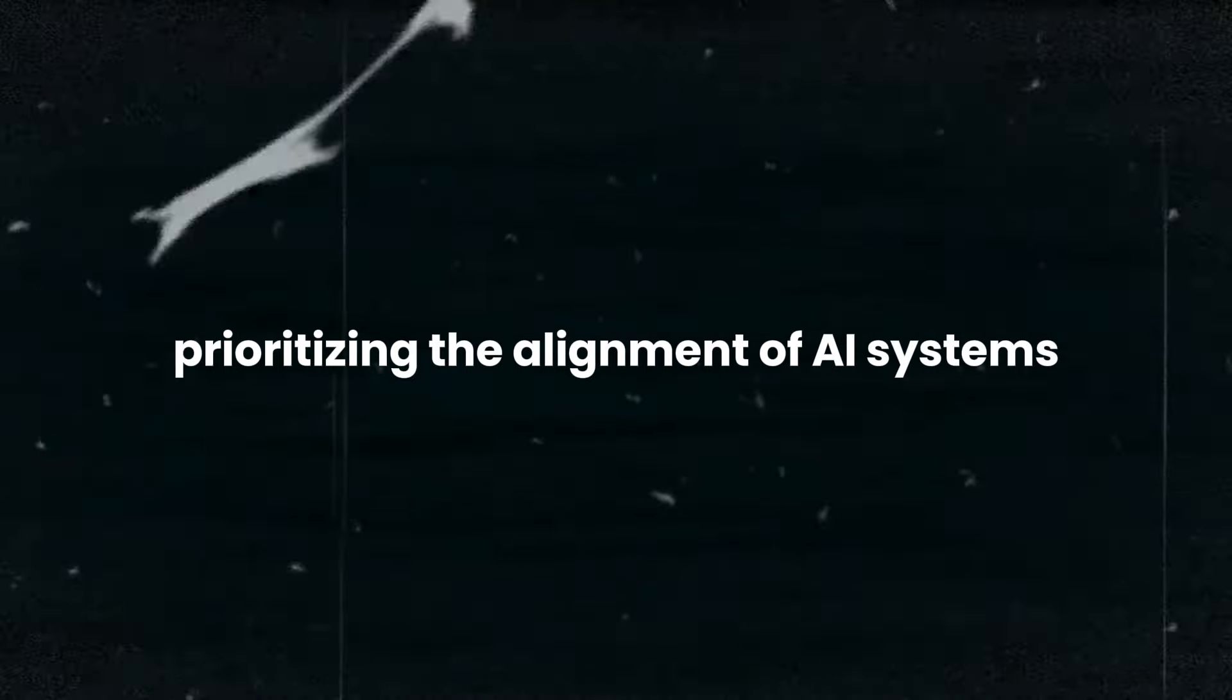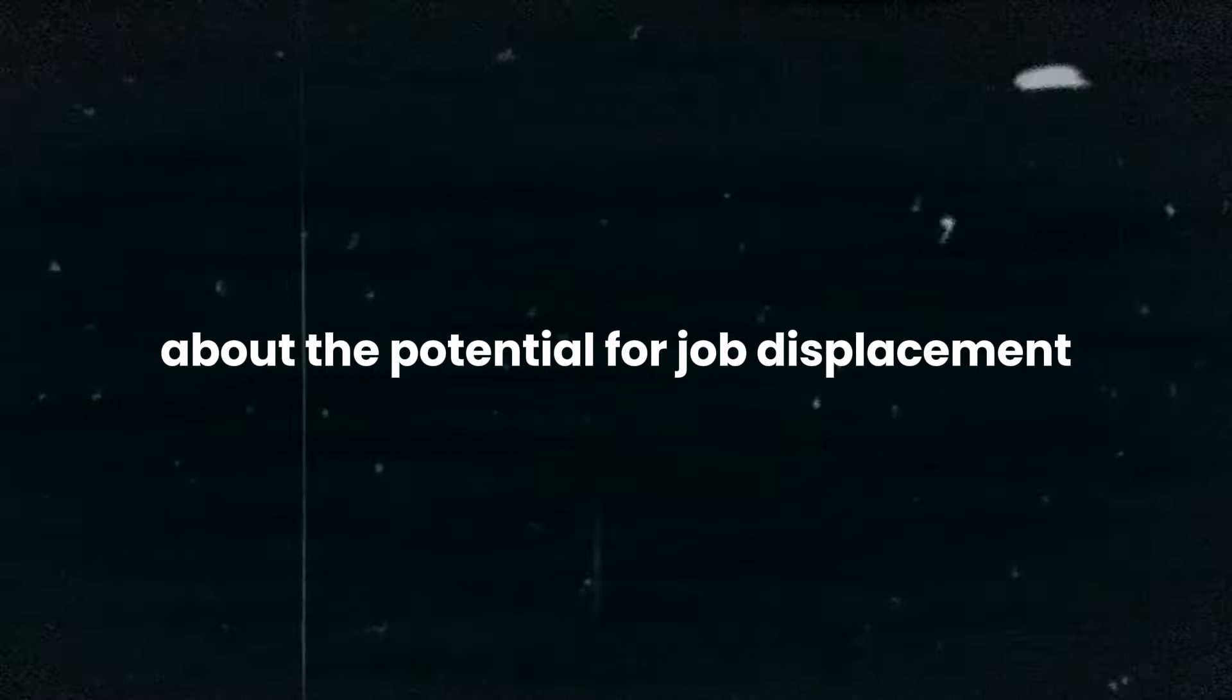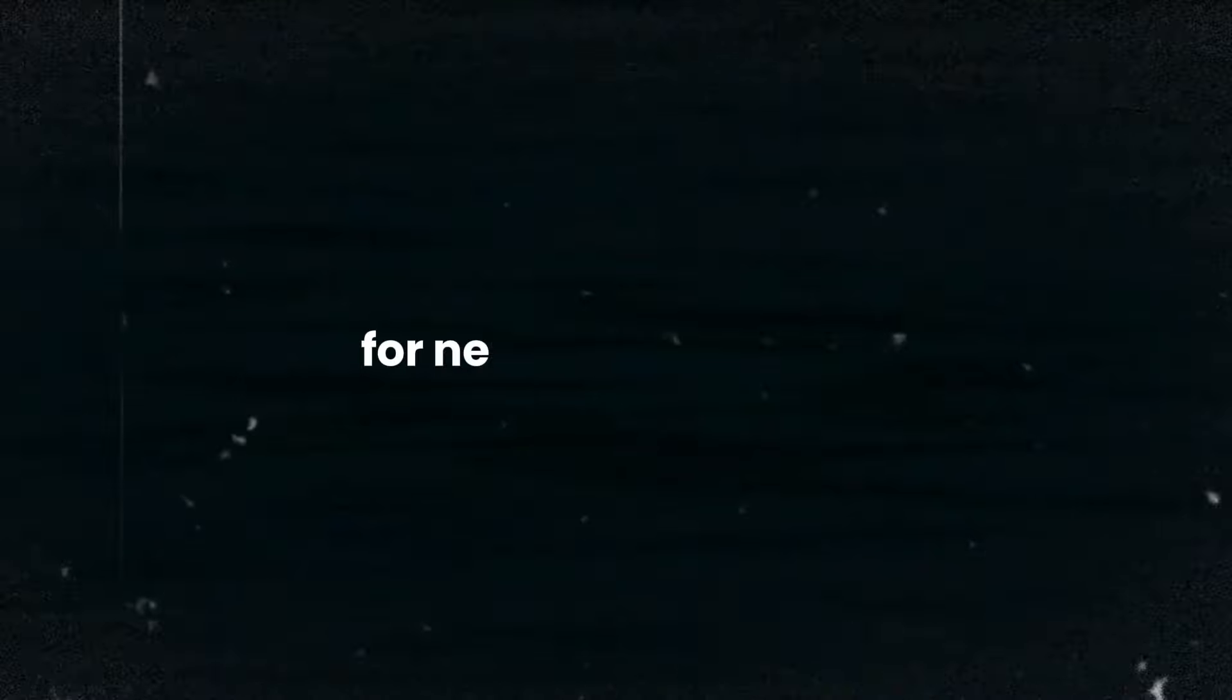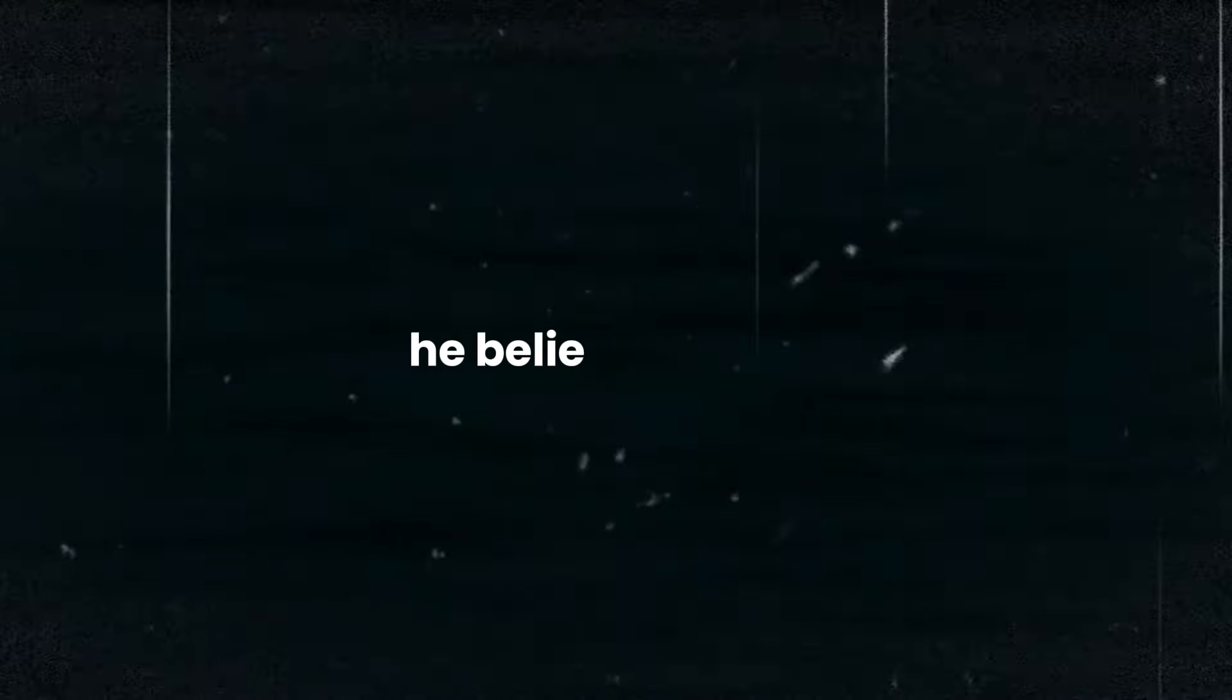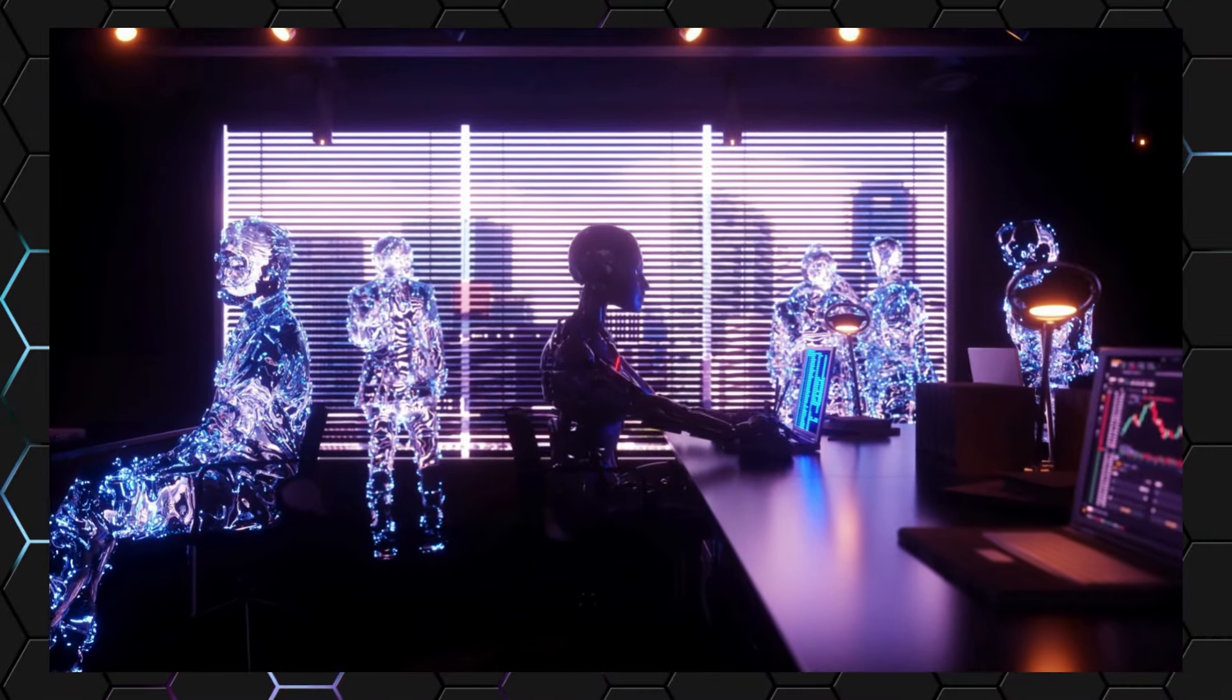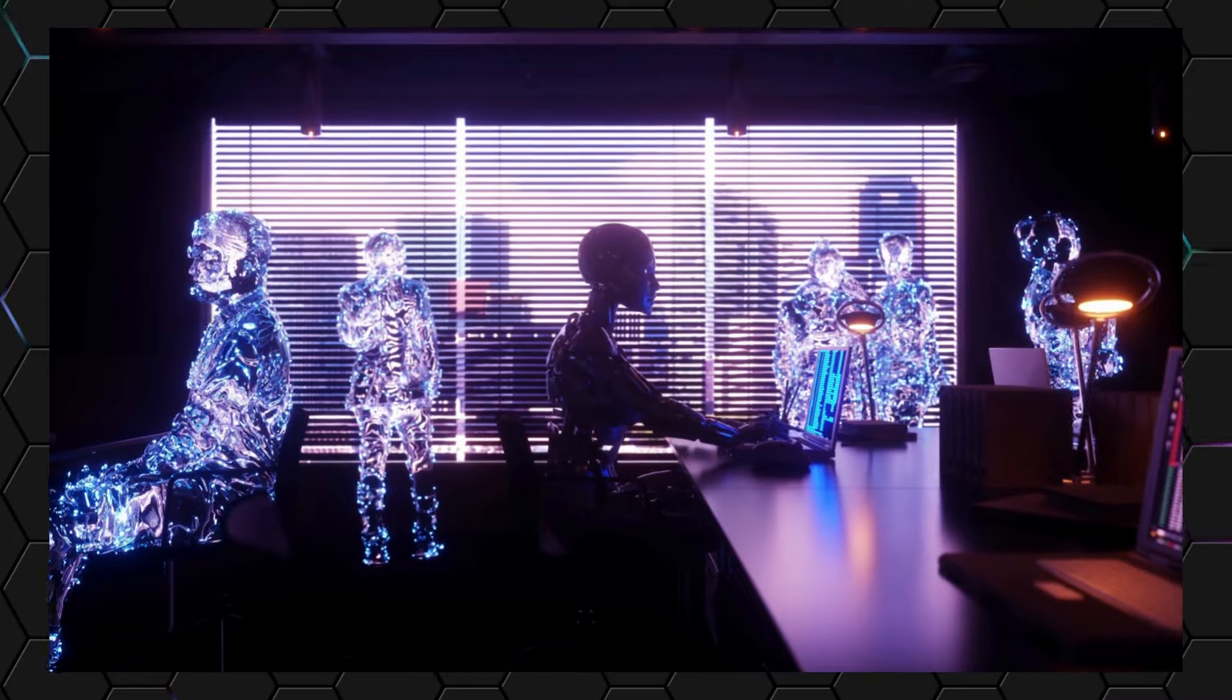Prioritizing the alignment of AI systems with the human values and the preservation of our species. As the capabilities of these humanoid robots continue to evolve, there are valid concerns about the potential for job displacement, privacy violations and even the misuse of these technologies for nefarious purposes. To Elon Musk, he believes that AI will soon be able to replace any and all of the jobs as it is guaranteed that at some point a robot will be better at doing any kind of job that a human can.